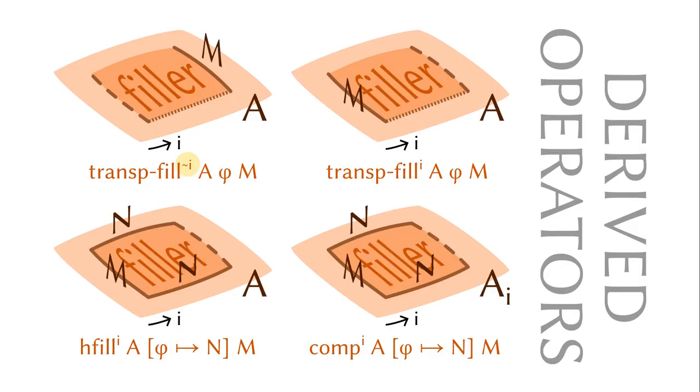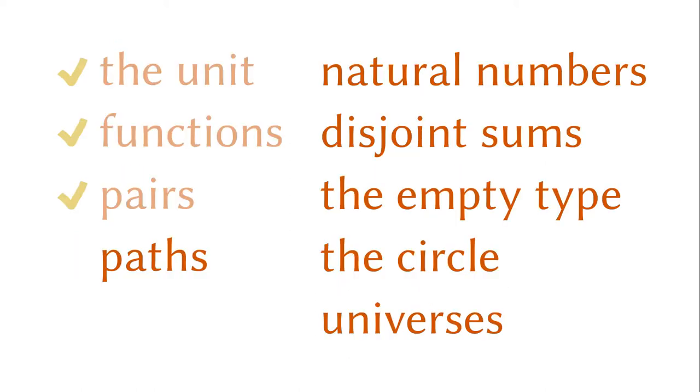We have seen various derived operations. They are all definable from hcomp and transp. We will not discuss them today, but these are perfect exercises. So we have done the unit type, the function types, and the pair types. More types are coming.